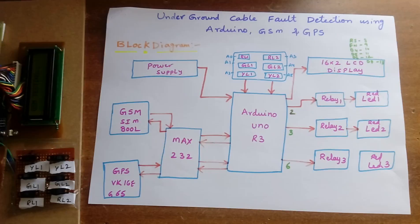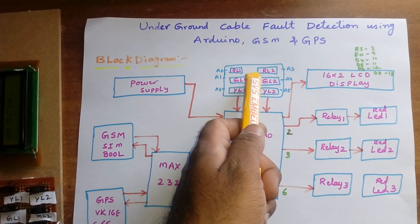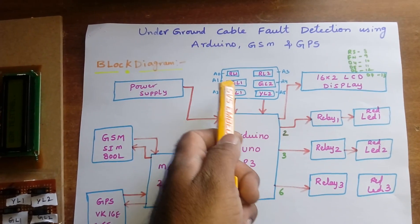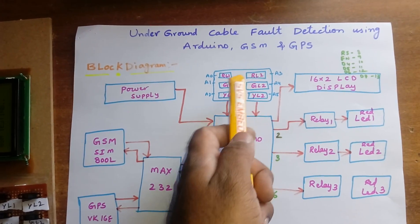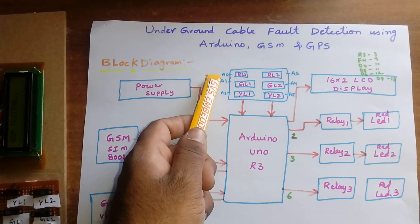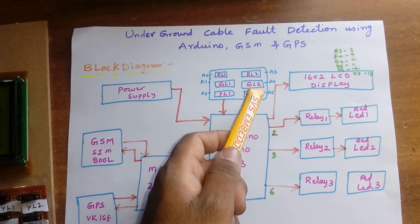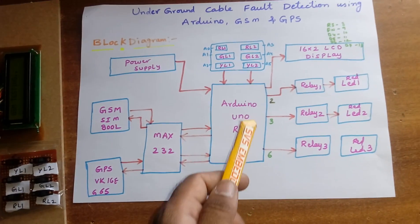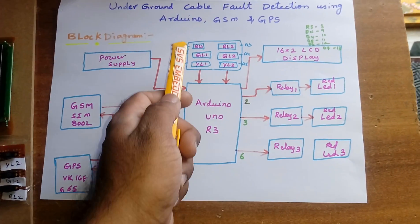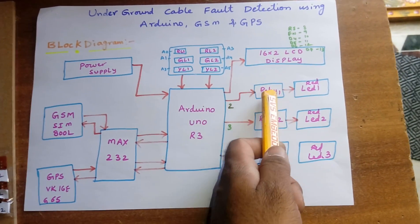The fault locations are RL1, RL2, GL1, GL2, YL1, and YL2. These are connected with analog pins A0, A1, A2, A3, A4, and A5. I am using three relay coils: if red is fault it goes to relay one, green is fault relay two, yellow is fault relay three. I am also using one MAX232 development board.